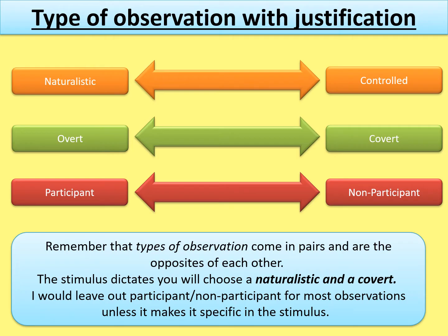Your first bullet point — use it as a subheading: type of observation with justification. Types of observation come in pairs and are the opposites of each other, so you have to decide which ones you're going to use: naturalistic or controlled, overt or covert, and you might want to say whether it's participant or non-participant. Unless it specifies in the stimulus, I would stay away from participant and non-participant. Participant observation tends to be for things like undercover investigations of football hooliganism or a cult. You could just say non-participant, but I wouldn't bother.